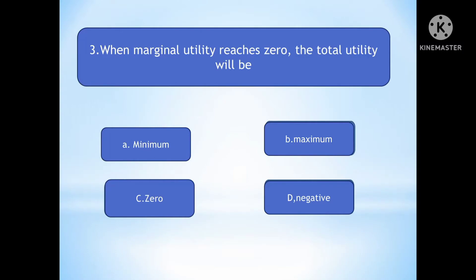Question number three: When marginal utility reaches zero, the total utility will be dash. The right option is Maximum. When marginal utility is zero, total utility is at its maximum.